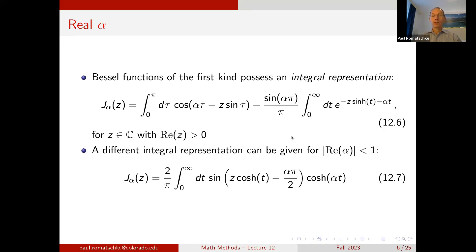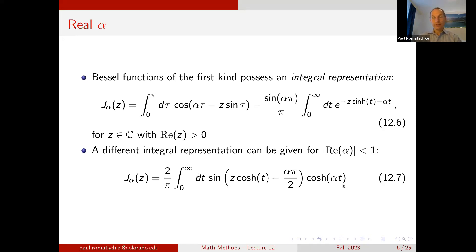One can also give a different integral representation for real values of α with absolute value less than one, given as an integral from 0 to infinity times the sine of a cosine hyperbolic times a cosine hyperbolic term.